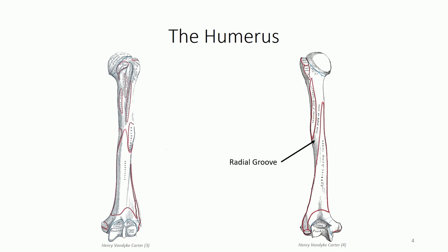Distally, the humerus terminates in two distinctive surfaces that articulate with the bones of the forearm. The trochlea lies medially. Trochlea is a Latin term for pulley or spool, which accurately describes its appearance. The trochlea articulates with the trochlear notch of the ulna. Lateral to the trochlea is the capitulum — the term means 'little head,' which is an accurate descriptor for its smooth, rounded appearance. The capitulum makes up the lateral portion of the elbow joint, where it articulates with the head of the radius.